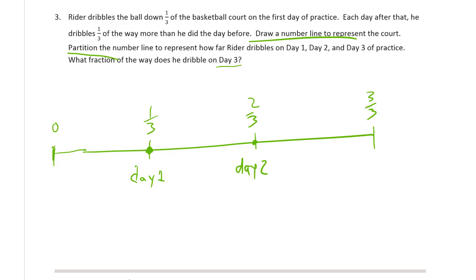And day three, he gets another third, and he gets all the way to the other baseline. This is day three. Day three, he got to three thirds. So what fraction of the way does he dribble on day 3? On day three. So he drew a number line to represent the court. Right. I'll label it court length.